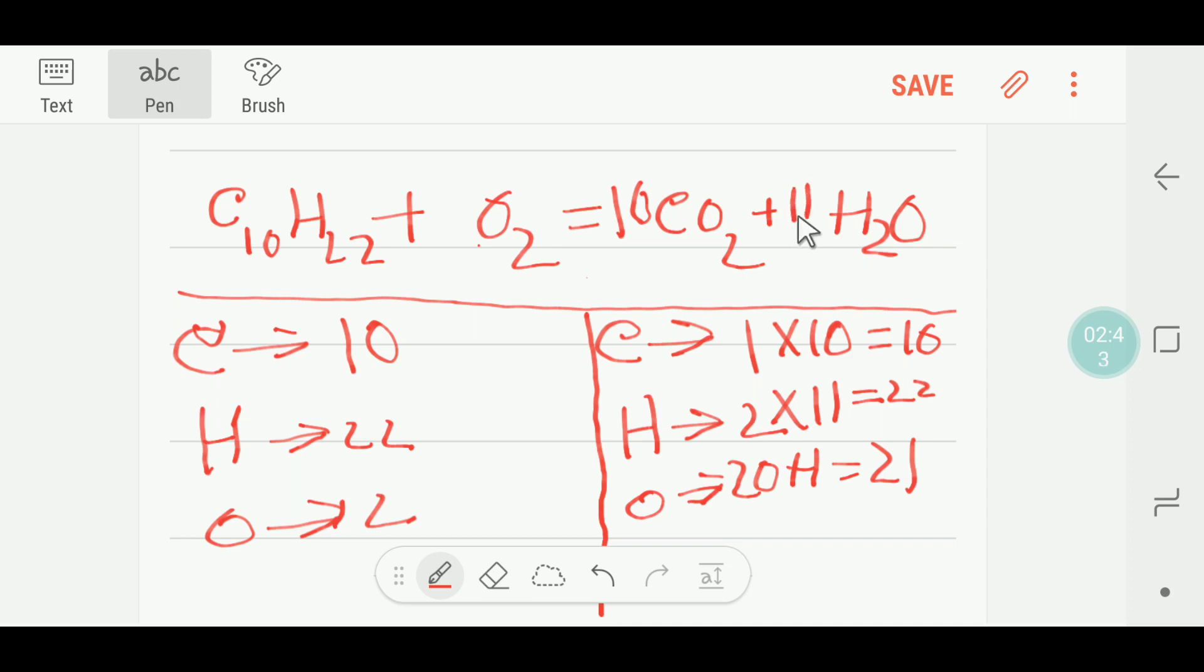If you put the coefficient 11 here, then the number of oxygen will be changed. We are getting 10 times 2, which is 20, plus 11 oxygen.